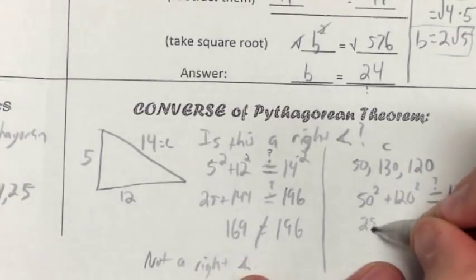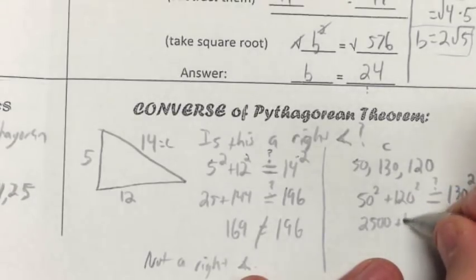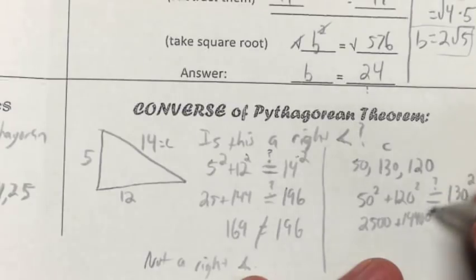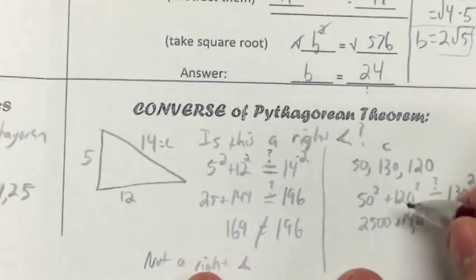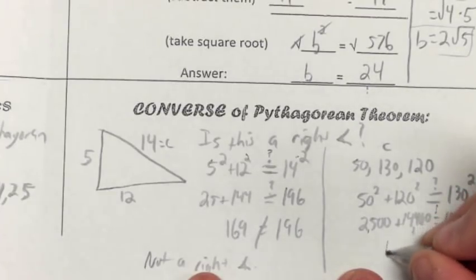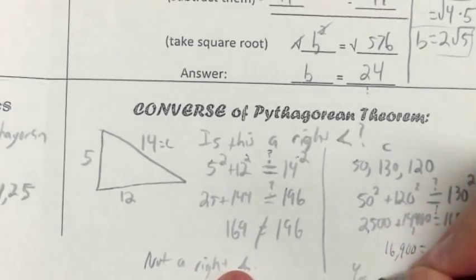Well, 50² is 2500 plus 120² is 14,400 and then 130² is 16,900. Now, when I add these two together, 14,400 plus 2,500, I get 16,900 is equal to 16,900, which those two are equal to each other, so I don't have to put the slash, and therefore, yes, makes a right triangle.